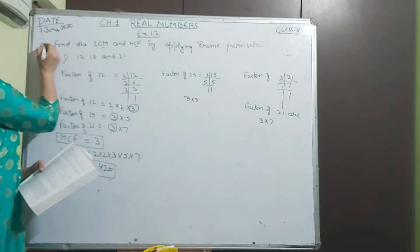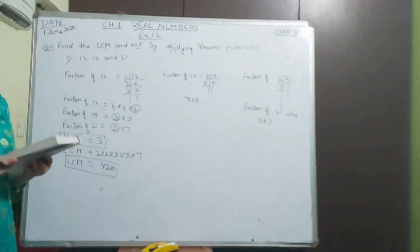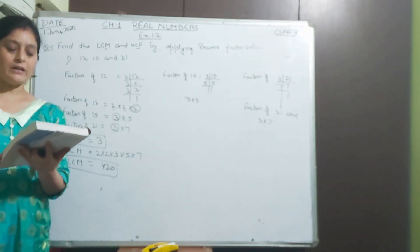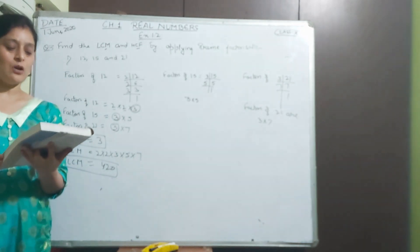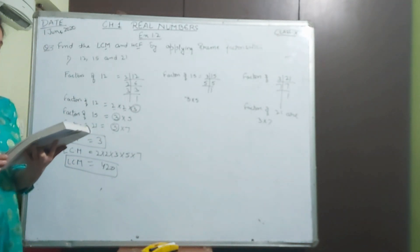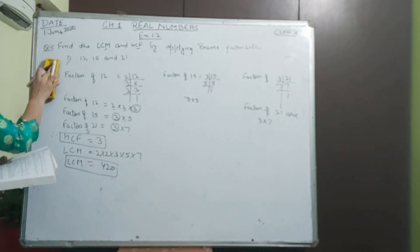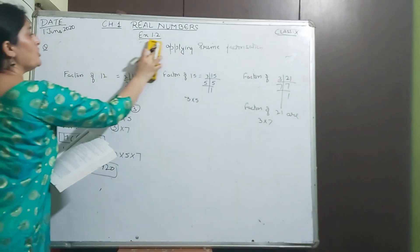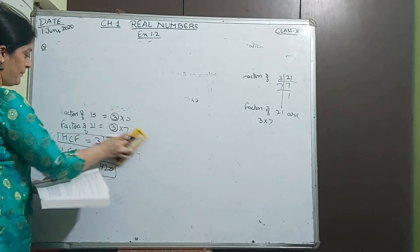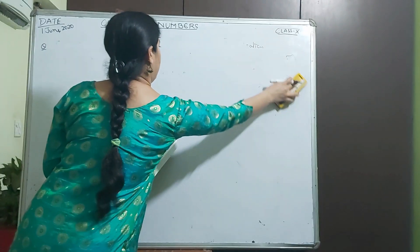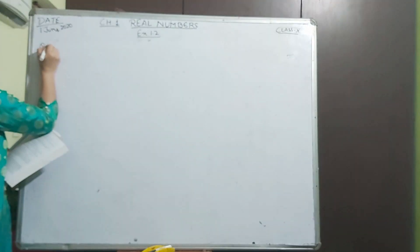In question third there are two more parts to do practice. Do practice. If you find any doubt, write in the comment box so I can clear your doubts. Now come to question number 4. Question number 4 says, given that HCF of two numbers 306 and 657 is 9, we have to find LCM.